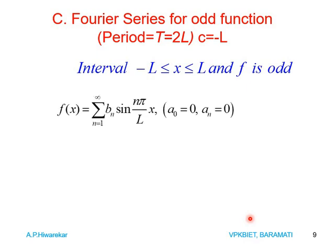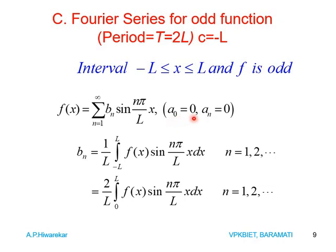When the period is 2L, C = −L, and the function is an odd function, then a₀ = 0 and aₙ = 0. The Fourier series is given by: F(x) = Σ bₙ sin(nπx/L) where n varies from 1 to infinity. The formula for bₙ is (1/L) ∫ from −L to +L of F(x) sin(nπx/L) dx. Since F is odd and sine is also an odd function, the product of two odd functions is even, so bₙ = (2/L) ∫ from 0 to L of F(x) sin(nπx/L) dx, for n = 1 to infinity.